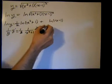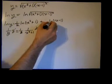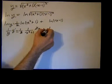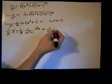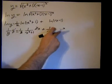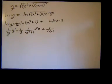Plus the derivative of the natural log of x minus one is one over the argument, one over x minus one times the derivative of the argument, which is just one.